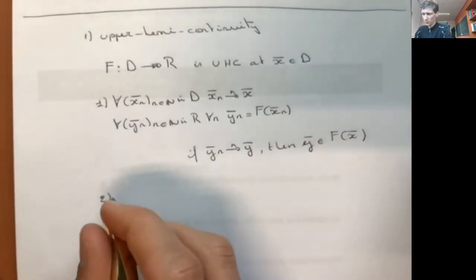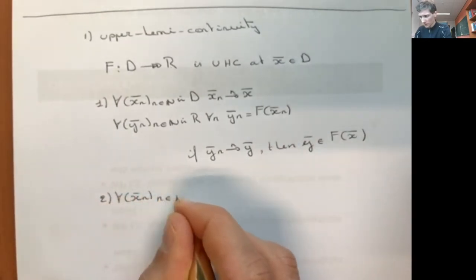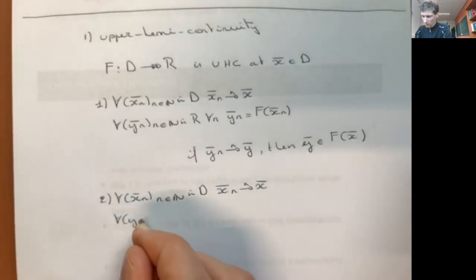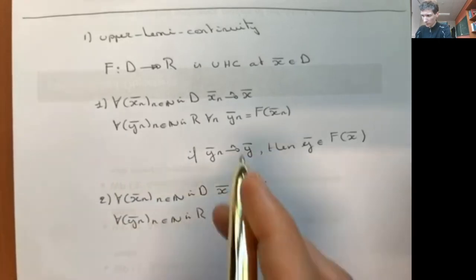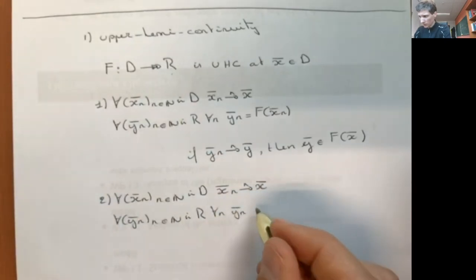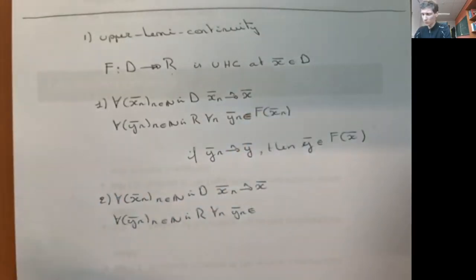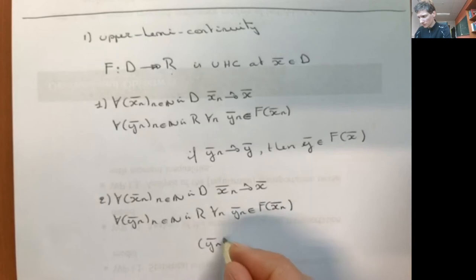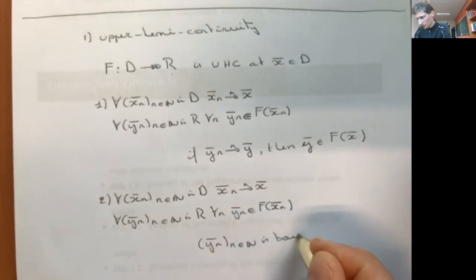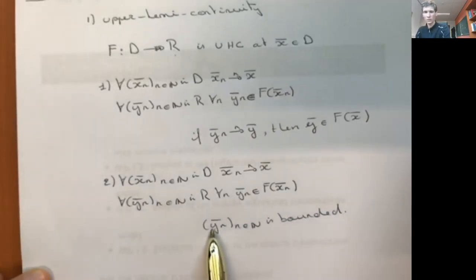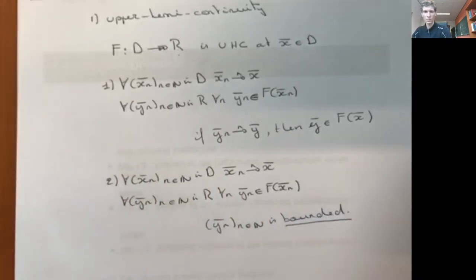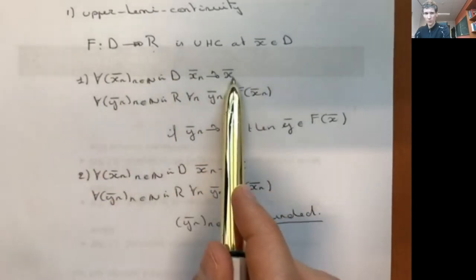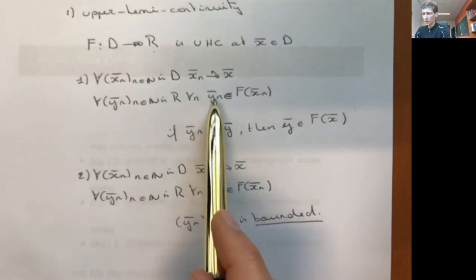The second part of the definition says: for all sequences x_n in the domain such that x_n converges to x, and for all sequences y_n in R such that y_n is in f of x_n, the sequence y_n is bounded. That is, there exists a number such that the norm of every element is less than or equal to this number.